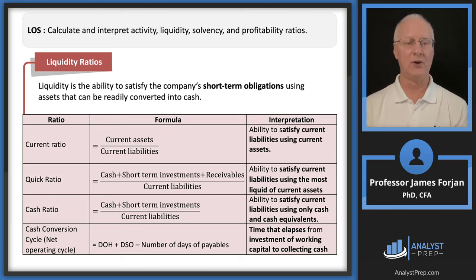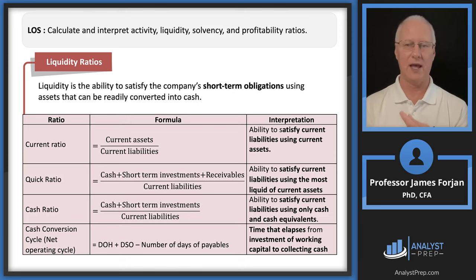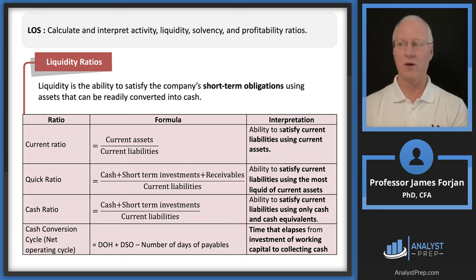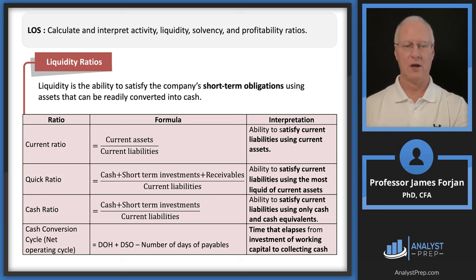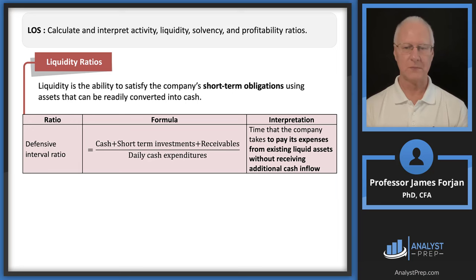Some firms are okay with current ratios below 1; others are not. The risk of a ratio too low is insolvency; too high is under-investment — not finding positive NPV projects. Accounts receivable and inventory potentially have negative rates of return. You can't just decide 1.1 is acceptable; you need to look at your five competing firms to use as a benchmark. Take a picture of this slide.